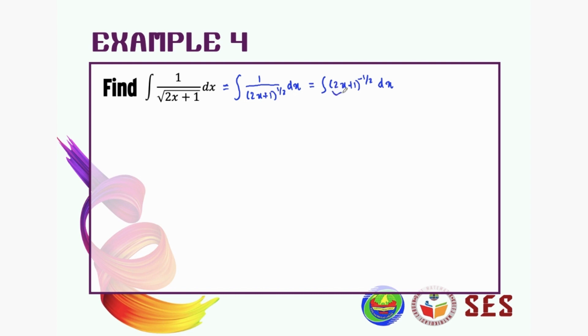We can see that this function has power inside, so we can let this one become our u. So we let u equal to 2x plus 1. We differentiate with respect to x, which gives us 2.